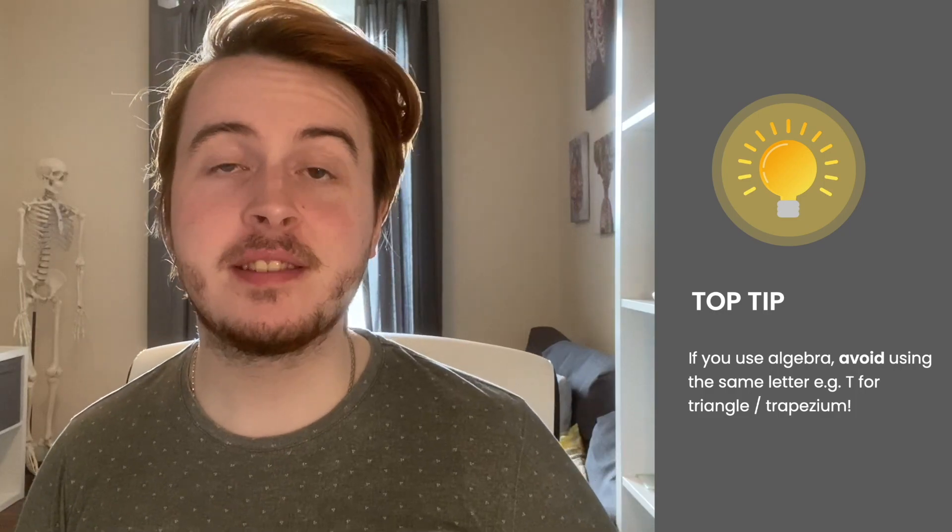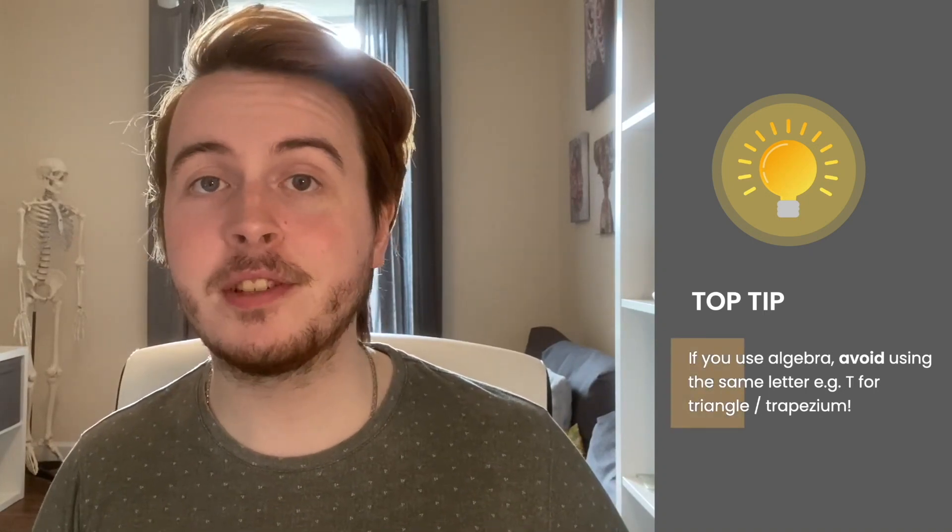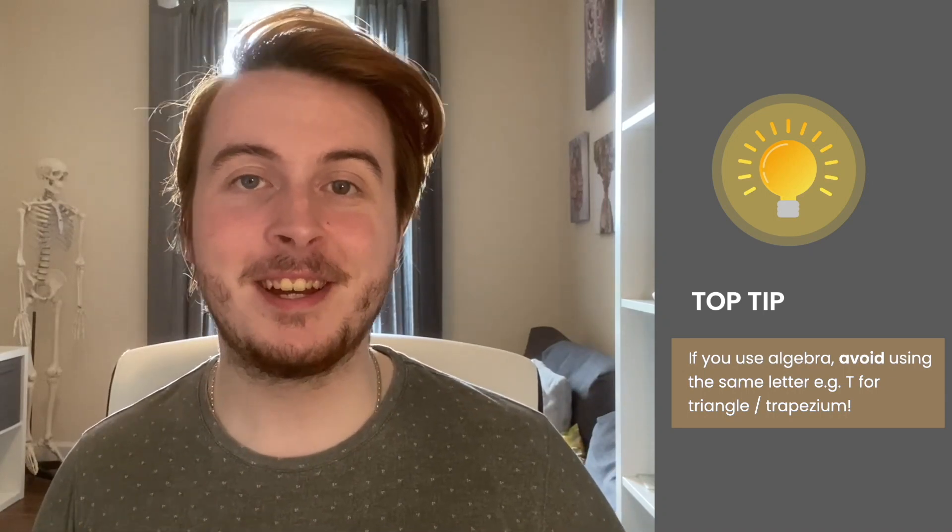It's not always possible to find a substitution, so sometimes we need the algebraic method. When choosing letters to represent the shapes, some people use the shape names — but be careful of duplicates like two T's for triangle and trapezium. Personally, I think the easier approach is to use the answer option letters. So if answer option B is a square, just label the square as B. That way you've got a legend on screen telling you exactly what each letter represents, with half the work.